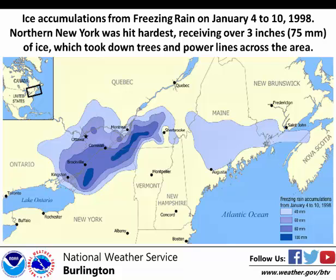The devastation in the January 1998 ice storm resulted in several deaths and long-lasting disruption to the region, primarily because people were unprepared for such a significant event. Storm damage was estimated over $3 billion. Millions of customers lost power, some for several weeks, millions of acres of trees were damaged, roads were impassable, and nearly 40 deaths were attributed to the storm across the affected region.